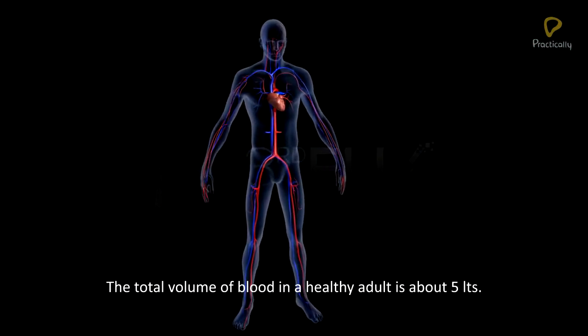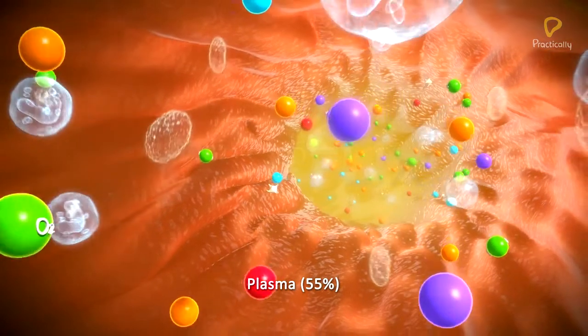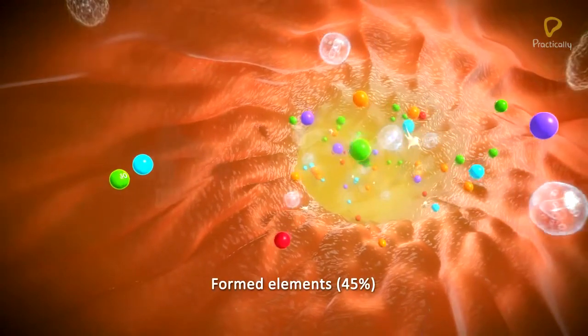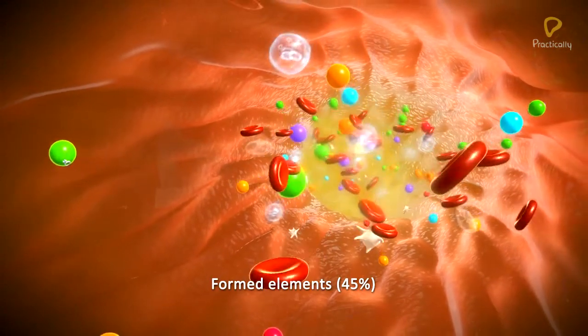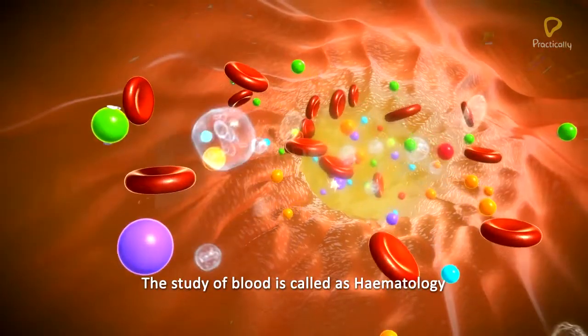The total volume of blood in a healthy adult is about 5 liters. The plasma constitutes 55% of its total volume and the formed elements constitute 45%. The study of blood is called haematology.